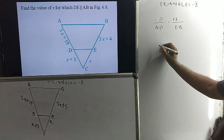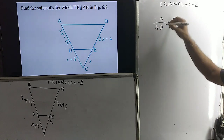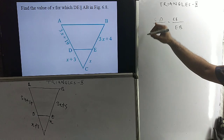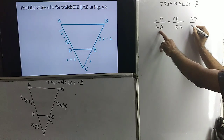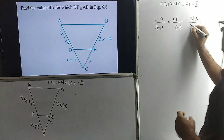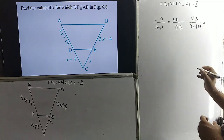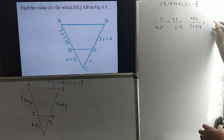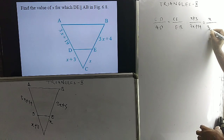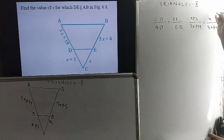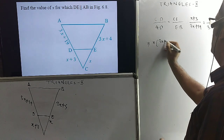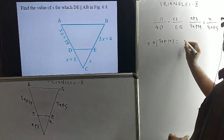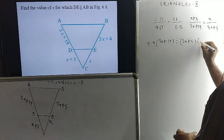Now we replace the corresponding values: CD equals x+3, AD equals 3x+19, CE equals x, and EB equals 3x+4. So (x+3)/(3x+19) = x/(3x+4). We then do cross multiplication: x times (3x+19) equals (3x+4) times (x+3).